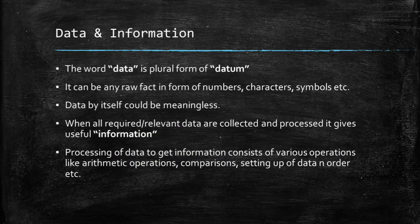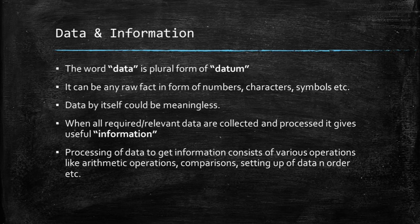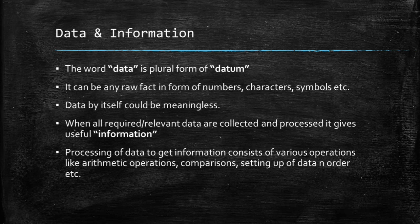Now let's move on to what data and information mean. The word 'data' is the plural form of 'datum' — it is any raw fact, which could be in the form of numbers, characters, or symbols. Data by itself is meaningless, but given context and processing, it transforms into meaningful information. When all required and relevant data are collected and processed, it gives us useful information. Processing of data to get information consists of various operations like arithmetic operations, comparisons, and ordering of data, for which various hardware devices are used.